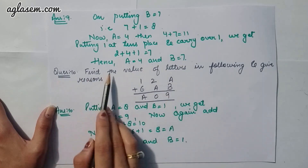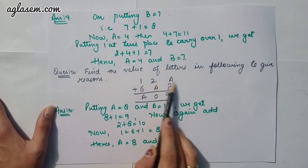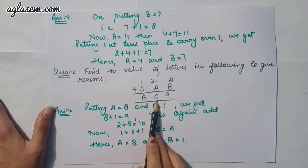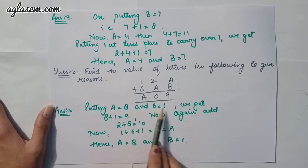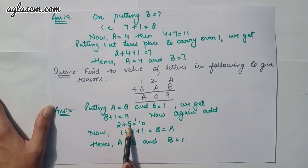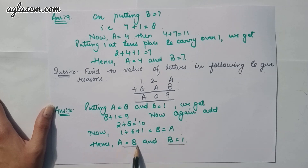Moving to the last question: 12A + 6AB = A09. Putting A = 8 and B = 1: 8 + 1 = 9. Then 2 + 8 = 10, carry 1. Then 1 + 6 + 1 = 8, which is A. Therefore A = 8 and B = 1.